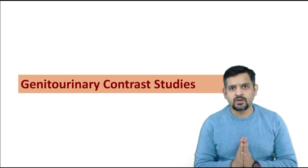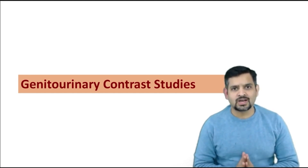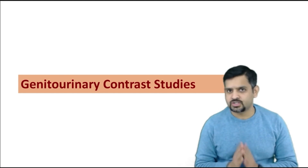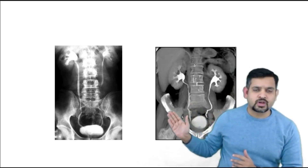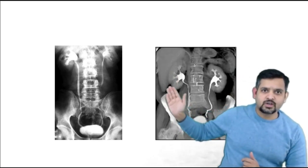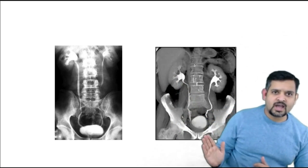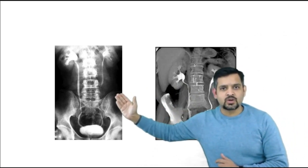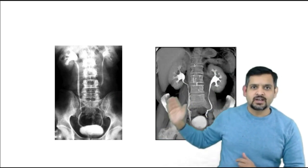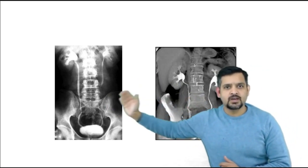In this video we will learn about important contrast studies used in the urinary system. If you see contrast going into the kidney, ureter, and bladder, this is intravenous urography. An important point to note: this is a radiograph — a conventional IVP — and this is a CT scan — a CT IVP.